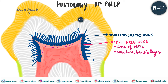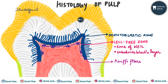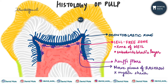The cell-free zone also contains the nerve plexus of Raschkow — a network of nerve fibers that have lost their myelin sheath. These arise from the pulpal core. Their terminal naked free fibers are the dendrites of sensory nerves and serve as specific receptors of pain.